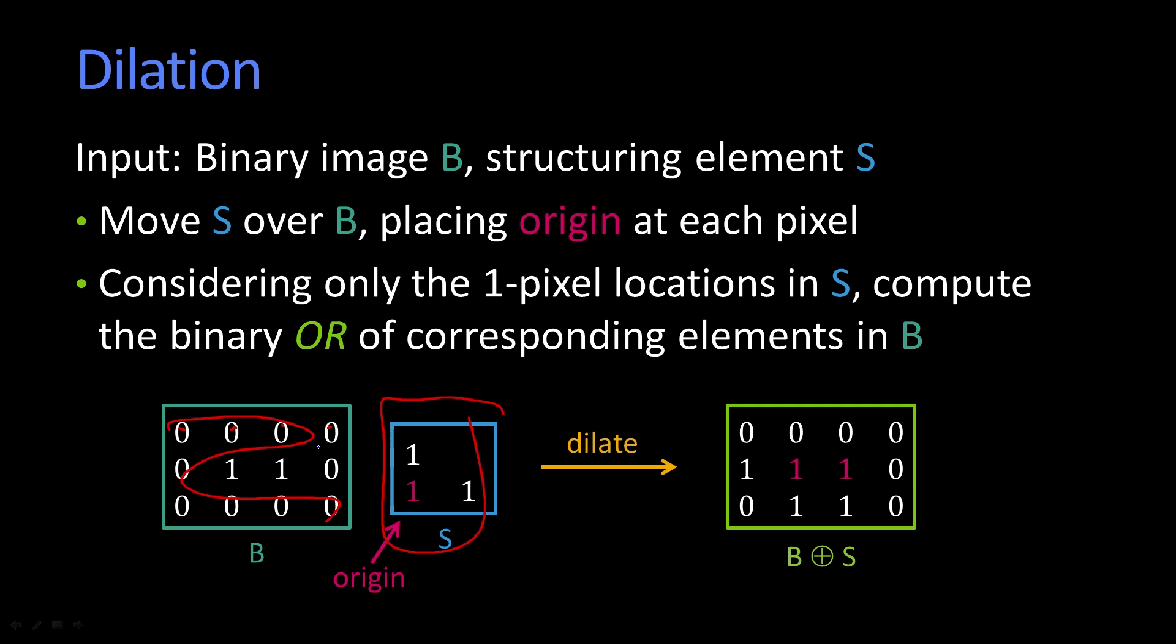And wherever you place it, you're going to take the OR of all of the ones in the structuring element with the ones underneath it. And so what that means is, if any of the ones of the structuring element land on a one in the binary image, the OR of all that will be one.